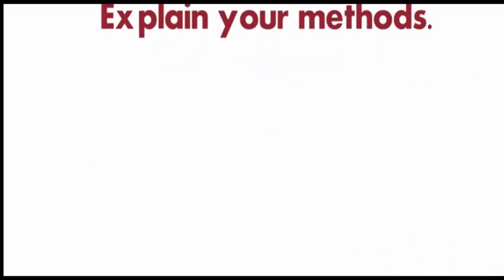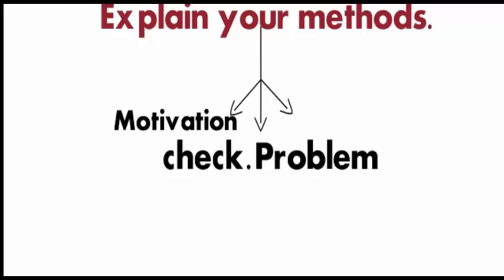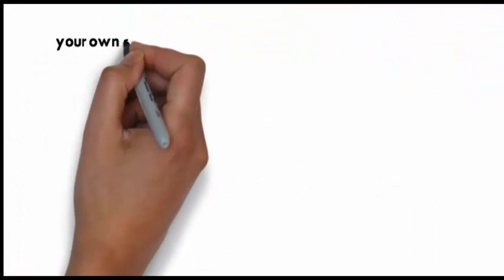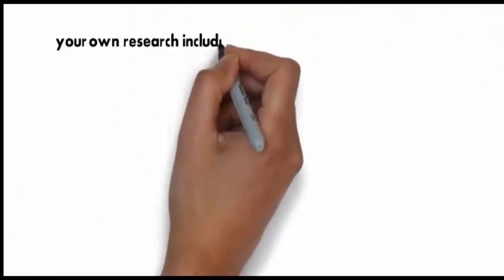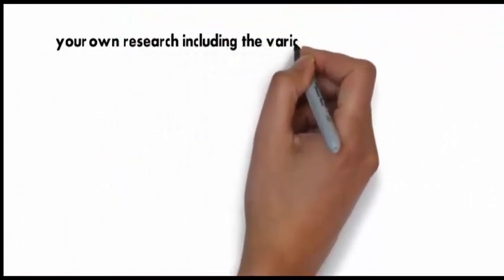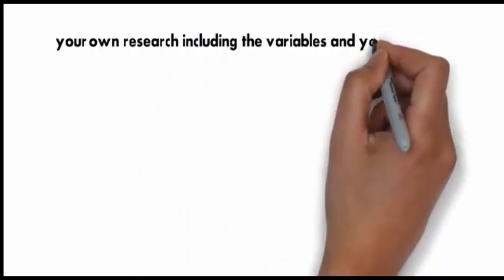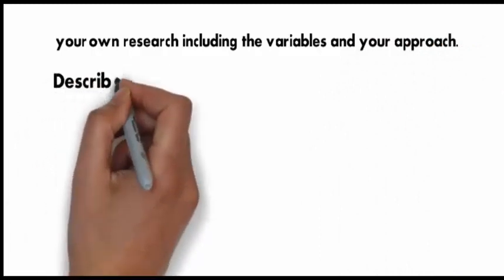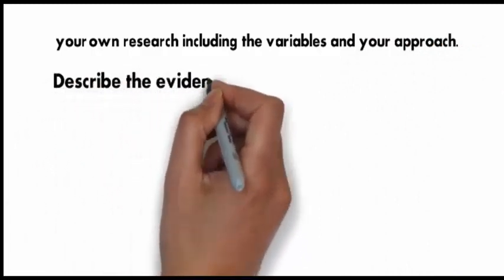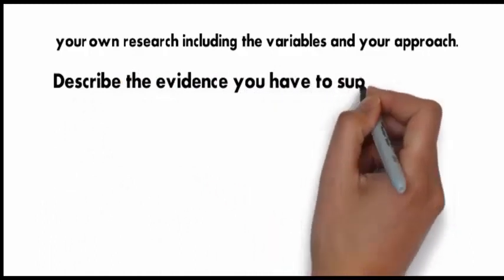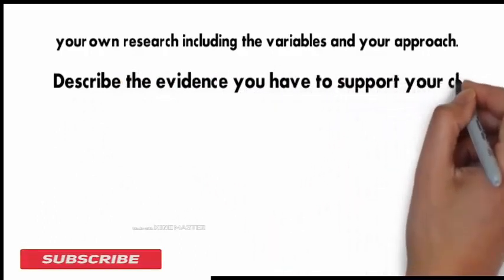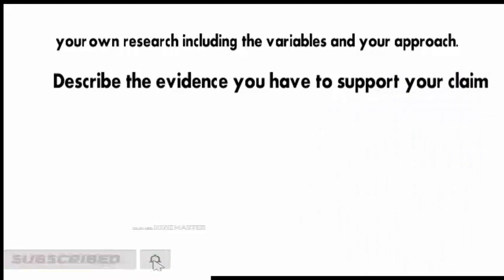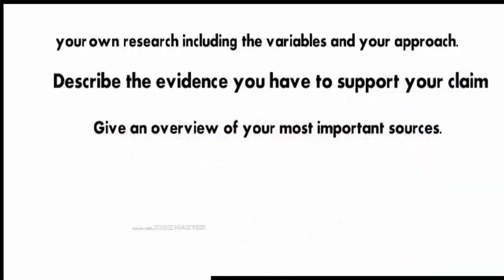Explain your methods. Motivation? Check. Problem? Check. Methods? Now is the part where you give an overview of how you accomplished your study. If you did your own work, include a description of it here. If you reviewed the work of others, it can be briefly explained. Discuss your own research, including the variables and your approach. Describe the evidence you have to support your claim. Give an overview of your most important sources.